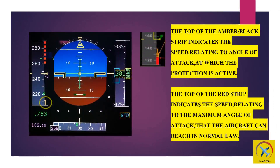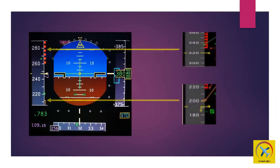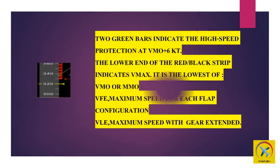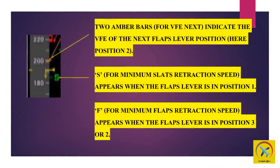The top of the amber-black strip indicates the speed relating to the angle of attack at which protection is active. The top of the red strip indicates the speed relating to the maximum angle of attack the aircraft can reach in normal law. Two green bars indicate high speed protection at VMO plus 6 knots. The lower end of the red-black strip indicates VMAX, which is the lowest of VMO or MMO, or VFE (maximum speed for each flap configuration), or VLE (maximum speed with gear extended). Two amber bars for VFE next indicate the VFE of the next flaps lever position. S indicates minimum slats retraction speed when the flaps lever is in position 1; F indicates minimum flaps retraction speed when the flaps lever is in position 3 or 2.